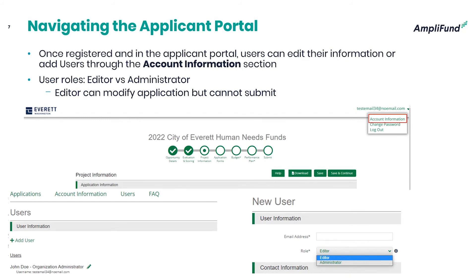There are two user roles within the applicant portal: editor and administrator. Administrators have full rights — they can add additional users, navigate through the whole application, and submit. Editors can modify the application and add information anywhere, but cannot submit. If everyone needs the ability to submit, set everyone up as administrator. If only one person should submit but multiple people should contribute, set the others up as editors. These roles can be modified by any administrator at any point.